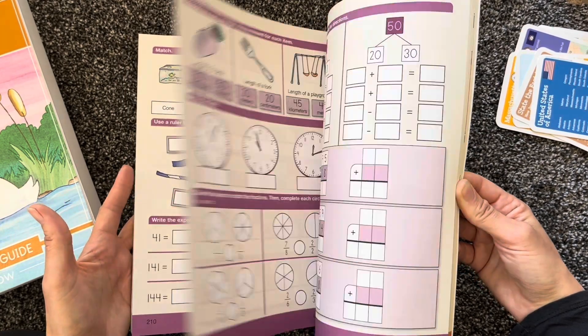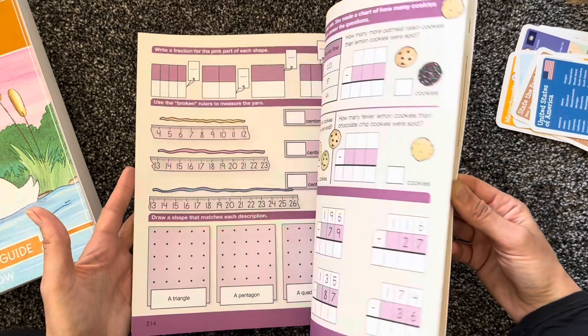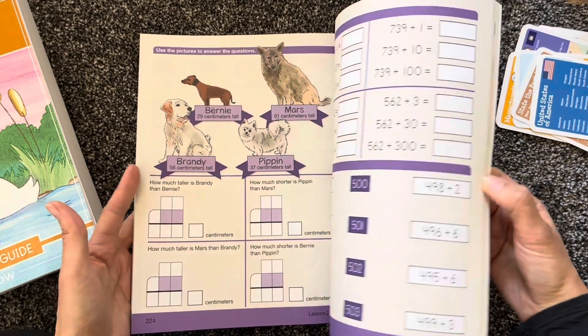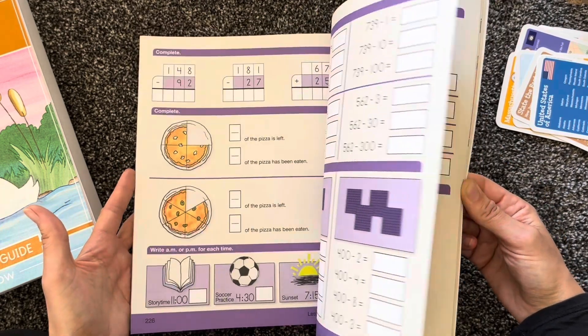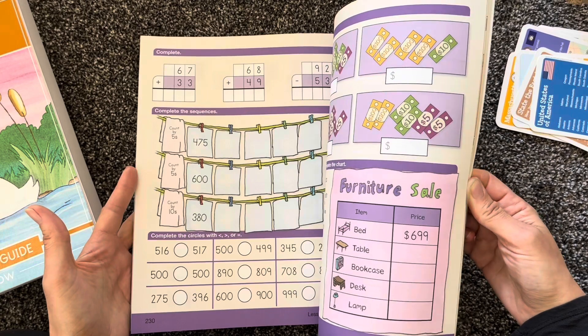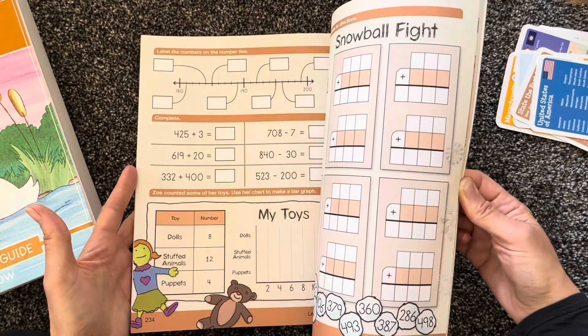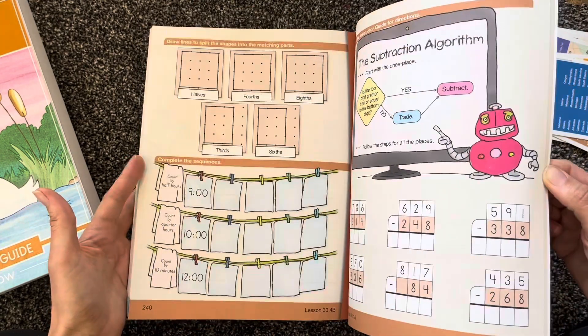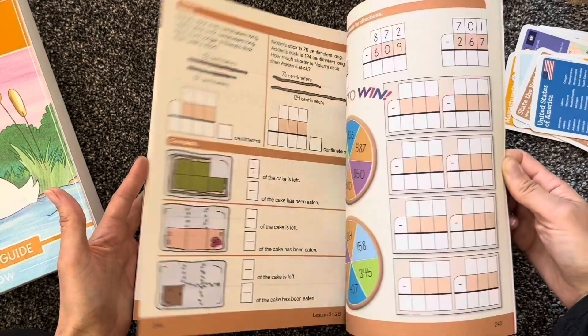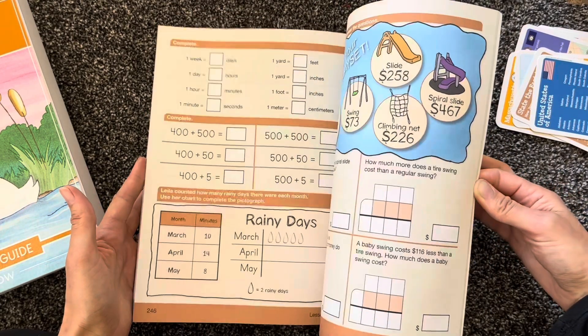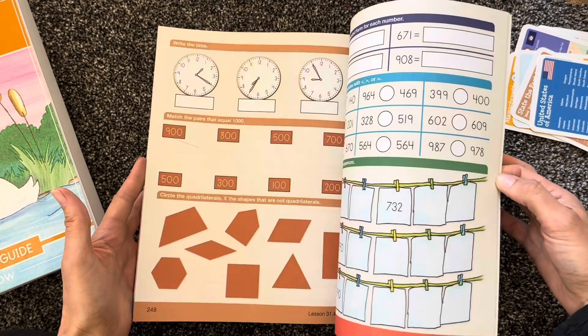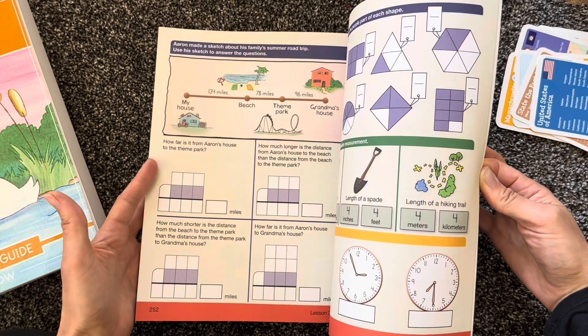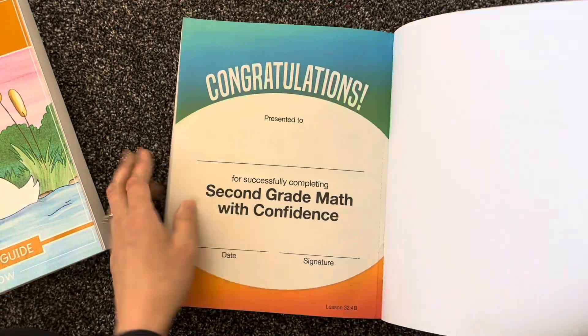Just for reference, Kate Snow has referred to this curriculum herself as being pretty spot on with grade level. And she's also called this a middle of the road program. And so you're not going to find necessarily the same advanced problem-solving techniques or as many word problems as we are seeing in Singapore Math with my oldest son. That's another kind of question I have of if we want to switch to all be on Singapore Primary.